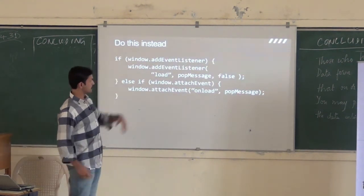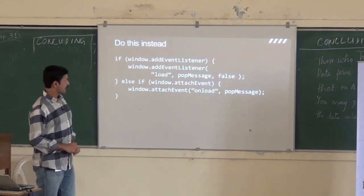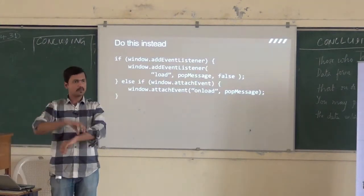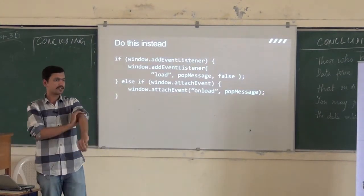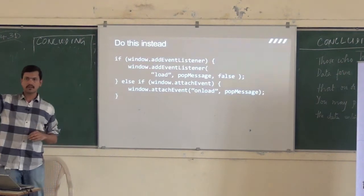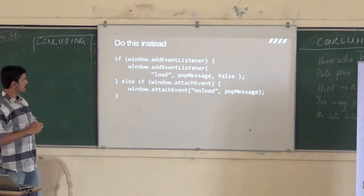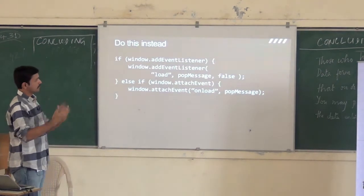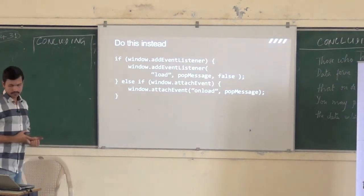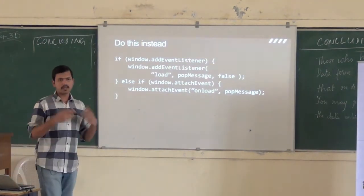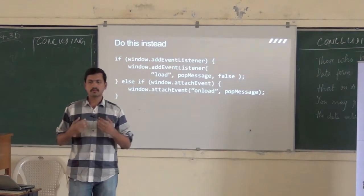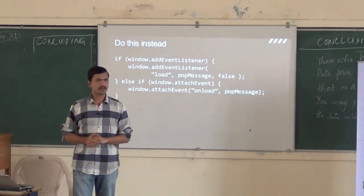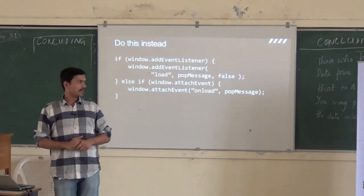This is probably a better alternative. Here we say: if window.addEventListener is available — we are basically sniffing for the existence of a particular property on a particular object. So we are saying if the window object has a method called addEventListener, then I go ahead and use that. Otherwise, I check if attachEvent is there. The benefit here is I really don't care what the browser is — all I am looking for is whether the feature I am looking for is available in that browser or not.